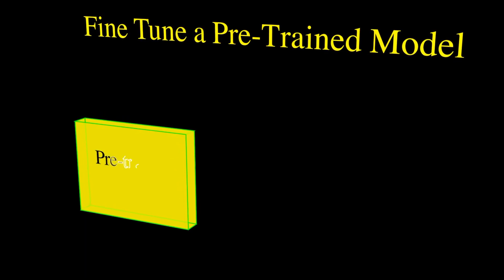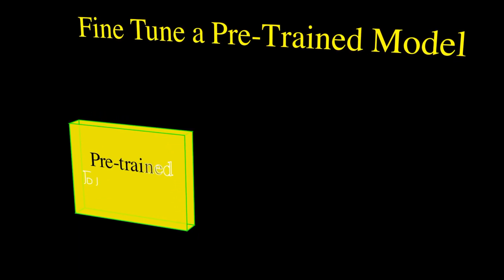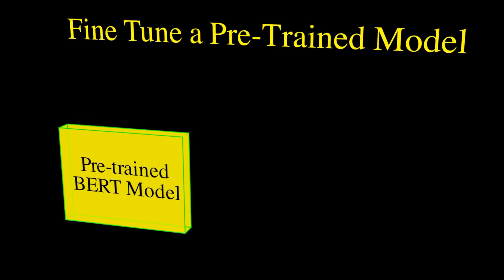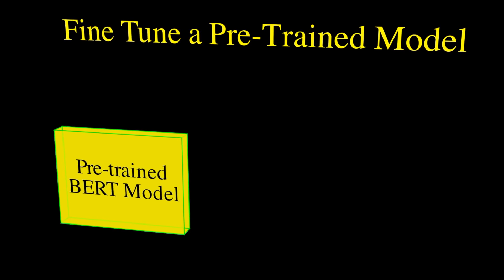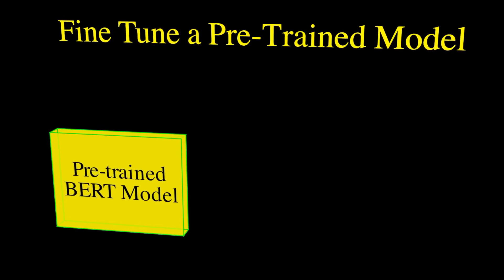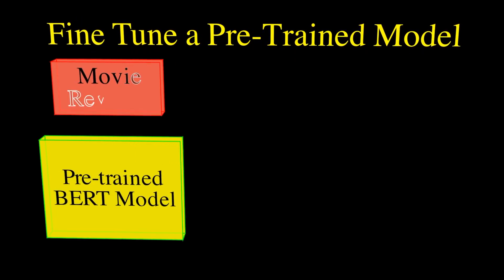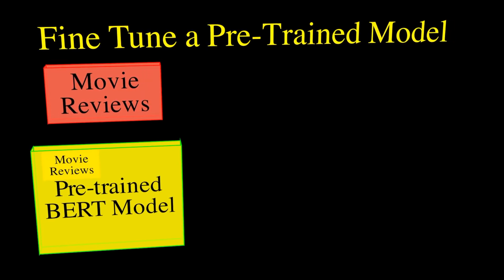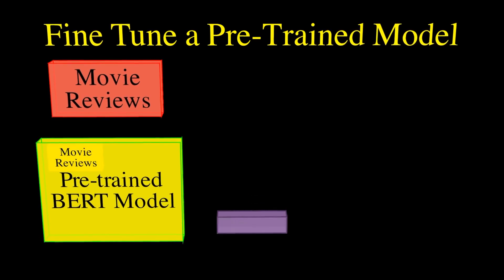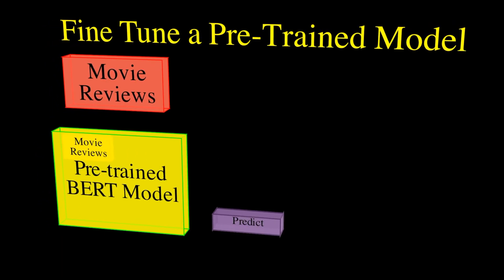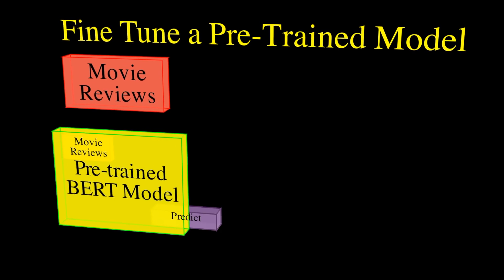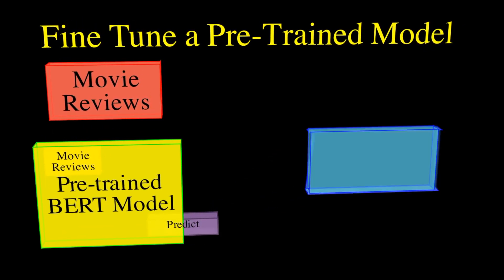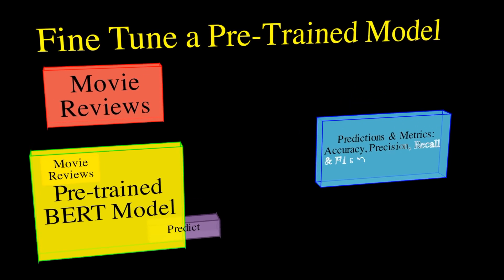Before we design our classes for this task, let's first review our requirements. We'll start with a pre-trained model. We'll use a version of the BERT transformer. We'll feed it with some movie review test data and see how it performs. In this case, we'll send it 25,000 movie reviews. And for this simple test, we'll see if it can correctly classify them as positive or negative. We'll compute our accuracy, precision, recall and F1 scores for this model.